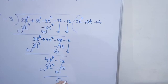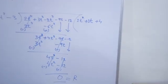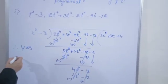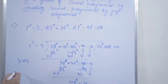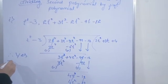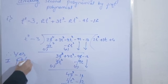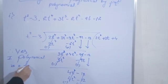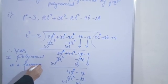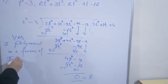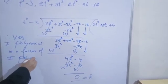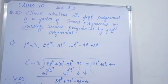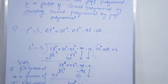Yahaan par hume remainder 0 aaya hua hai, to iska conclusion kya le sakte hain? Yes — first polynomial is a factor of second polynomial. First polynomial is a factor of second polynomial. Second one karenge.